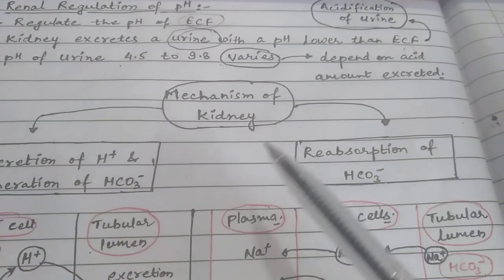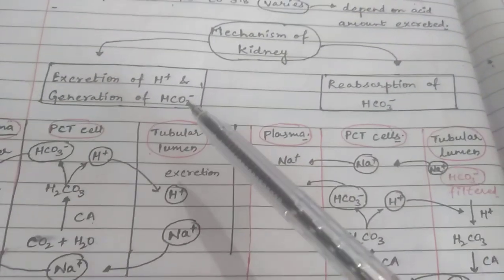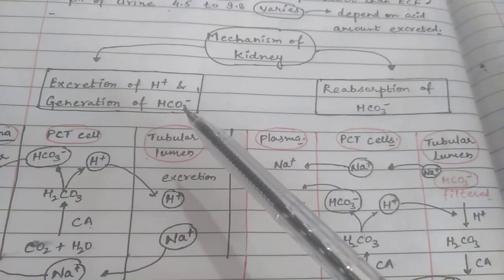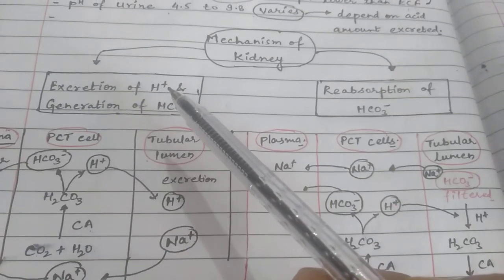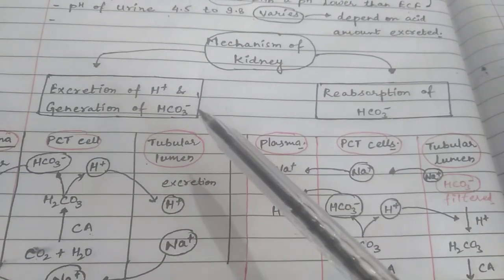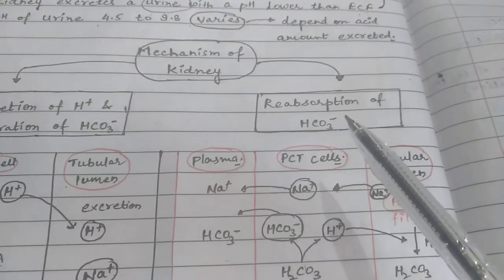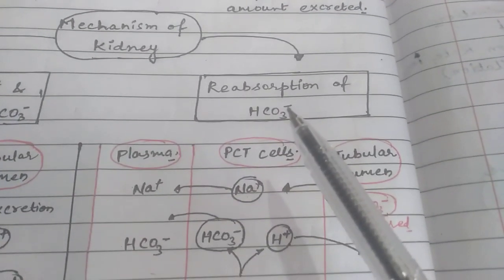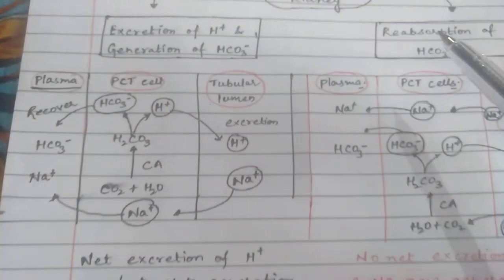The mechanism of the kidney involves two processes. Number one is the excretion of H+ and generation of bicarbonate, where both hydrogen and bicarbonate play a role. The second process is the reabsorption of bicarbonate.